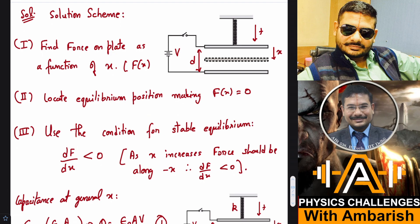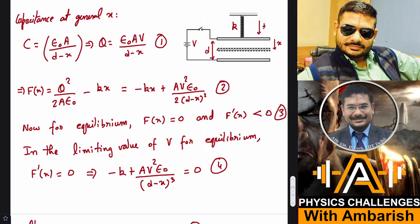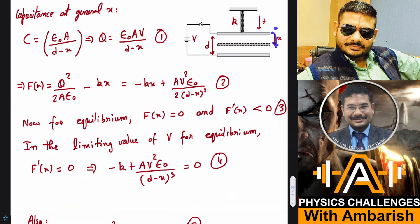What is the capacitance at a general x? This plate gets displaced by x, so then this gap becomes d minus x. Capacitance is epsilon naught A upon d minus x, and the charge in the plates should be Q equals CV. That's what the charge is.